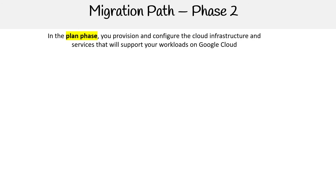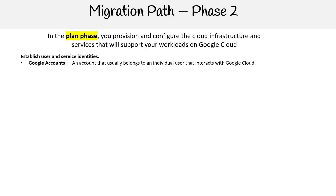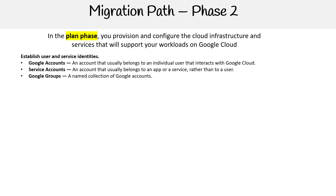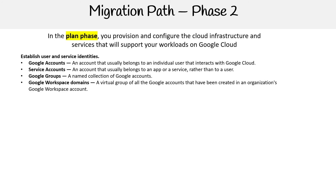In the Plan phase, you provision and configure the cloud infrastructure and services that will support your workloads on Google Cloud. Establish user and service identities: Google accounts belong to individual users that interact with Google Cloud; service accounts belong to an app or service rather than a user; Google groups are named collections of Google accounts; and Google Workspace domains are a virtual group of all accounts created in your organization's workspace.